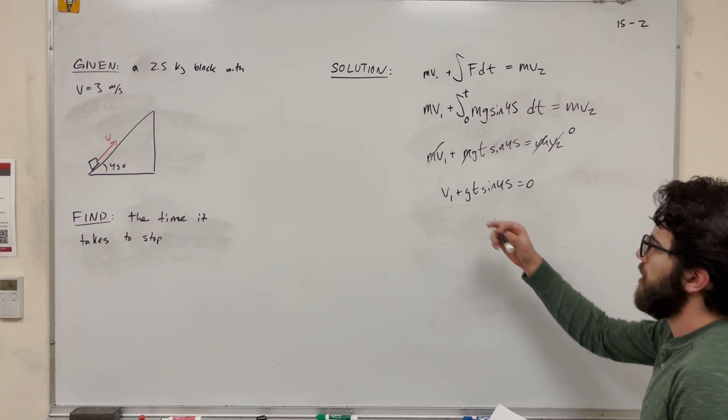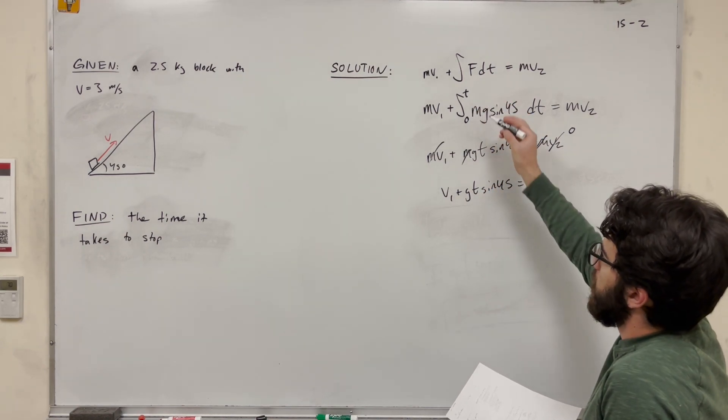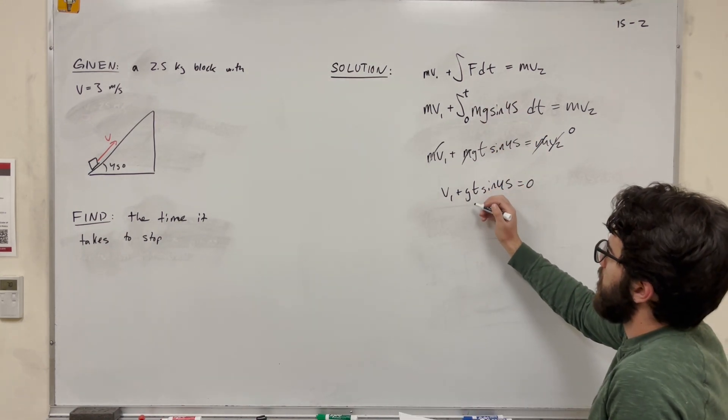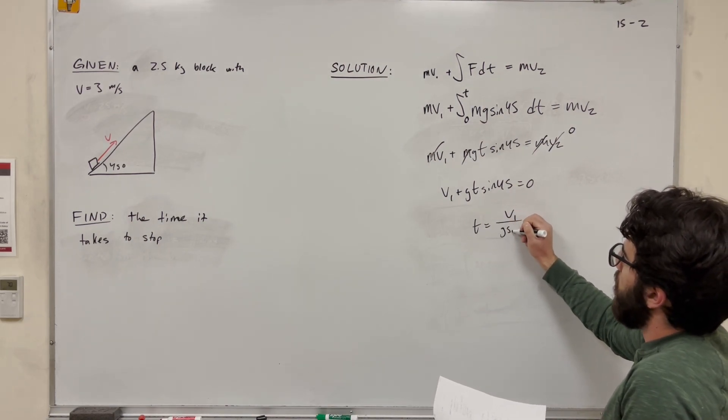So then we're going to get a negative. But gravity is also negative, so it's going to work out just fine. Because this is a negative force, this is going to be a negative number. So we're going to get T is equal to velocity 1 over gravity times sine of 45.